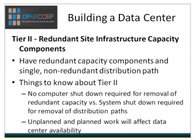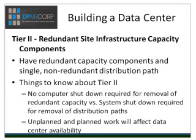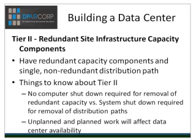The Uptime Institute requires tier two data centers to have redundant capacity components and a single non-redundant distribution path serving the computer equipment. The redundant capacity components can be removed from service on a planned basis without causing any of the computer equipment to be shut down. However, removing the distribution paths from service for maintenance or other activity will require the computer equipment to be shut down. Disruptions, either planned or unplanned, may impact data center availability. Any unplanned outage or failure of a capacity system or distribution element will affect the data center's computer equipment, and whenever preventative maintenance and repairs must be performed, the data center infrastructure must be completely shut down.